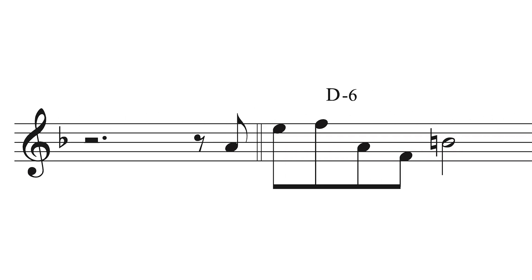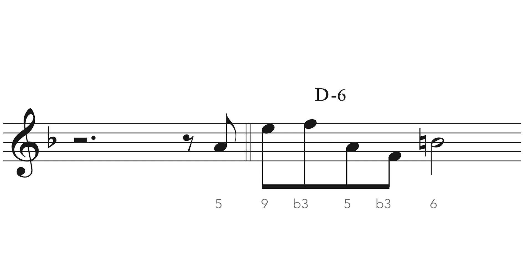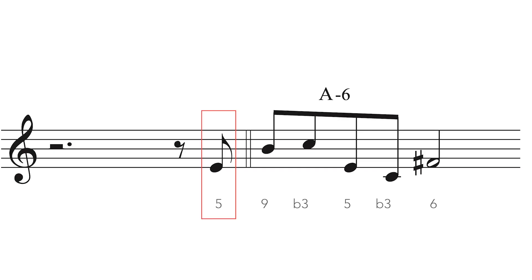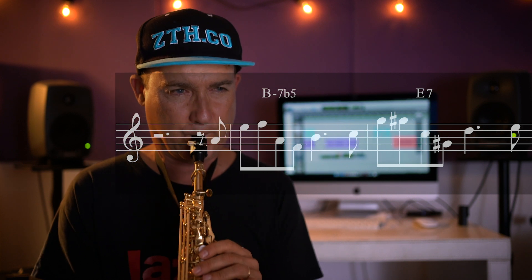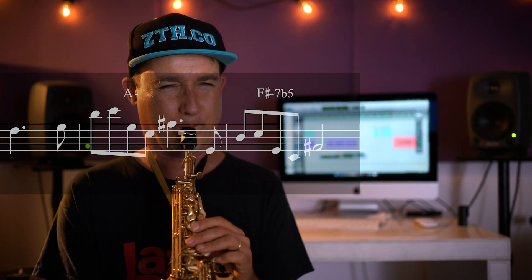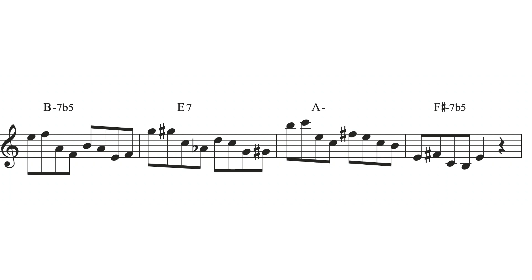Let's now superimpose Recorder Me over A minor. We can go back to the previous slide that showed how the melody notes related to D minor. Let's now listen to how the Recorder Me melody sounds superimposed over a minor 2-5-1 in A minor, and then a slight variation of this melody over a minor 2-5-1, sticking to the notes of the Recorder Me melody.